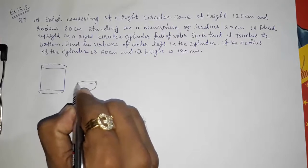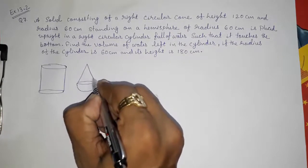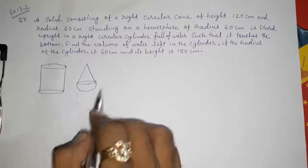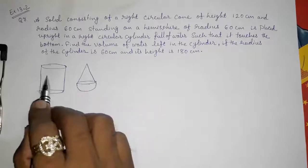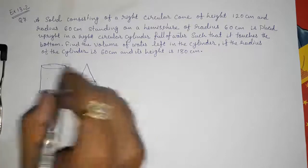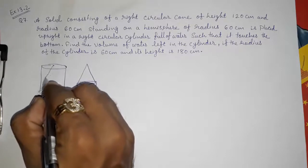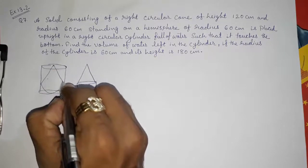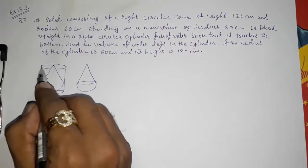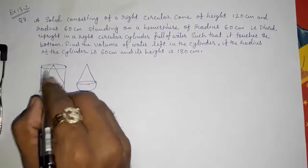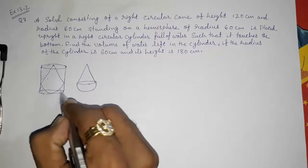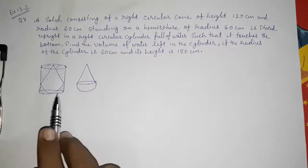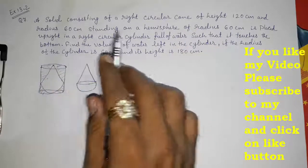So we are having a cylinder like this, then we are having a hemisphere surmounted by a cone. We are taking this whole three-dimensional figure and keeping it inside the cylinder, so that it will give us a shape like this. We have to find out the volume of the remaining water inside the cylinder.